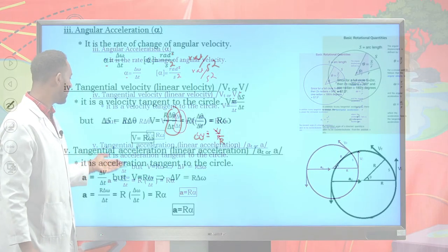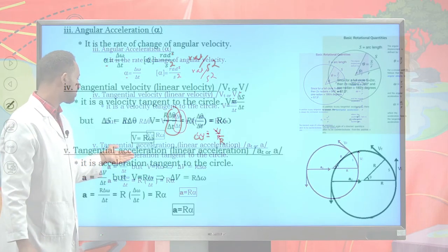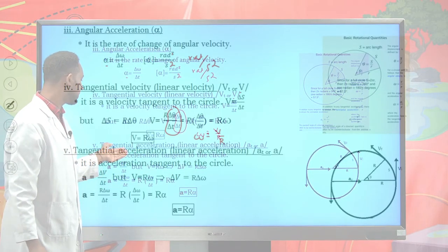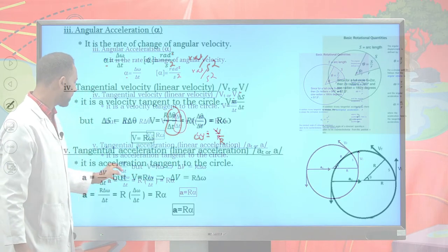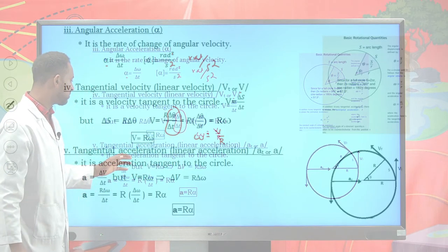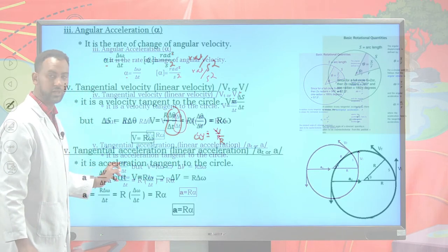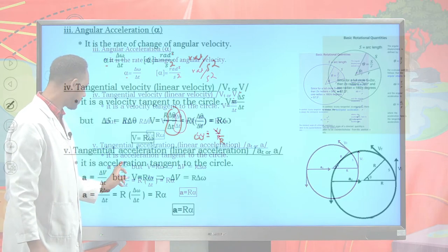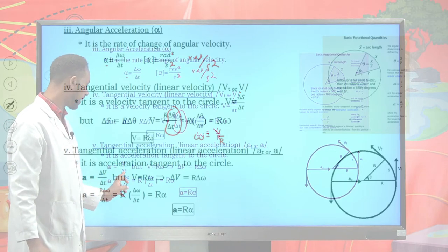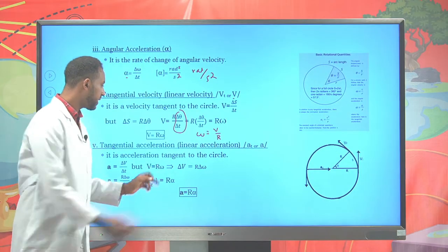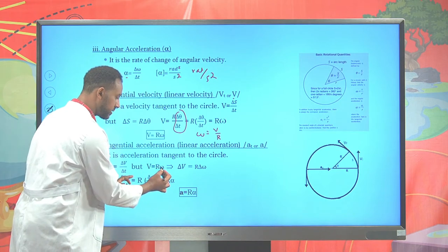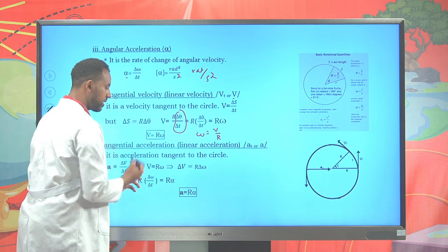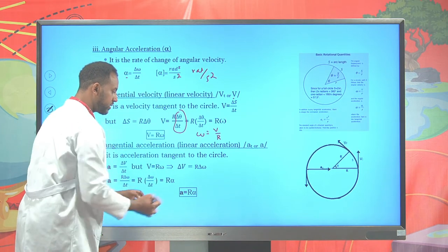It is also possible to relate acceleration. Tangential acceleration is generally defined as the rate of change of velocity over time t. We have said that velocity can be given as radius r times angular velocity: v = r × ω.